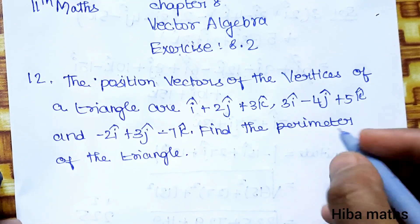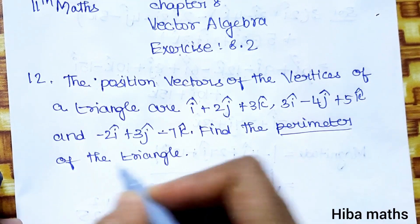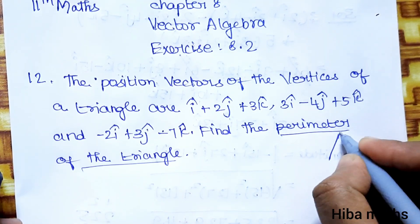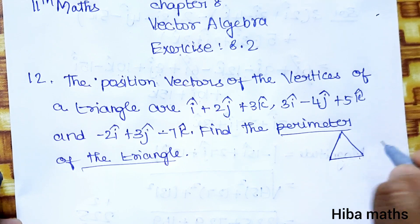The perimeter of the triangle is the sum of its sides. For triangle ABC, it will be the sum of the three sides AB, BC, and CA.